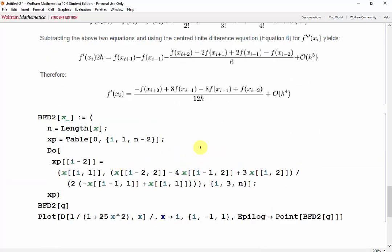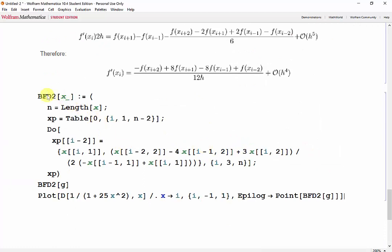Now pasting the function we just made, we'll change these to CFD2. And now the length of our vector will be n minus 4, because the derivative can only be found starting from the third point up to the third last point.